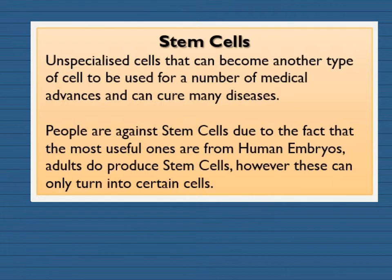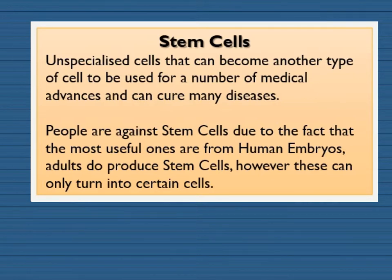You'll also need to know about stem cells — basically how cells differentiate at an early stage. They start unspecialised or undifferentiated and then become other types of cell. You also need to know about the pros and cons of using stem cells, evaluating whether they're useful and what the issues are in using them.